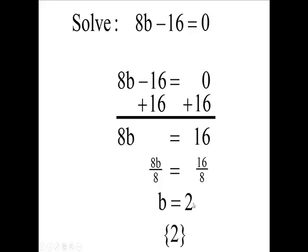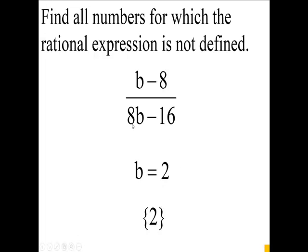So when b is 2, so we have a solution set with 2, and when b is 2, you're going to have 8 times 2 is 16, minus 16 is 0, and that will make this not defined here. So the number for which the rational expression is not defined is 2.